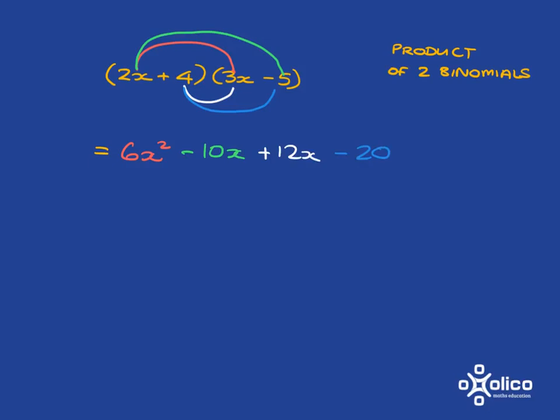Now I sort this out. 6x squared doesn't have any term to go with. 12x and minus 10x are like terms, so I combine them to get 2x, minus 20. That is my answer.